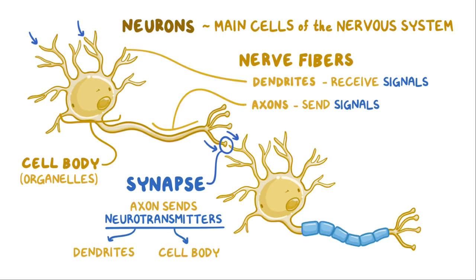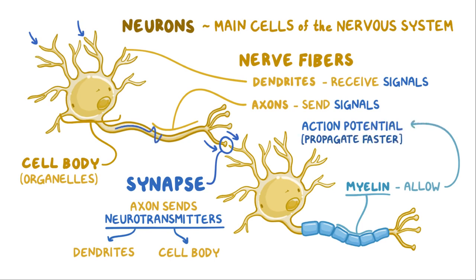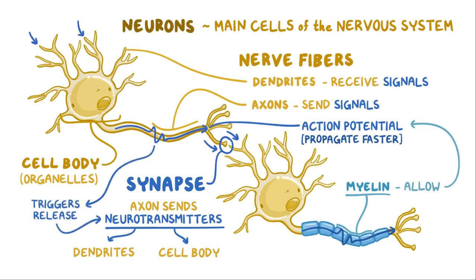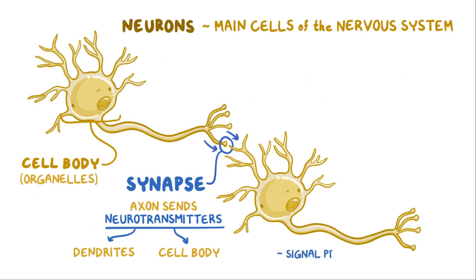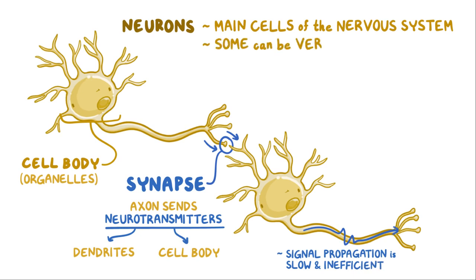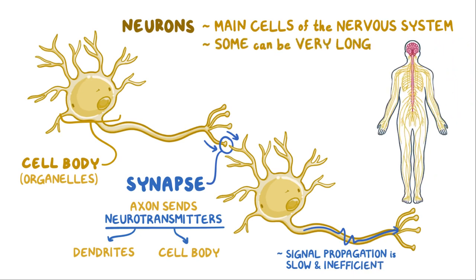The axons are intermittently wrapped in a fatty substance called myelin. Myelin is extremely important to neurons because it helps allow an action potential to propagate much faster. Action potentials are electrical signals that race down the axon and trigger the release of neurotransmitters, or a chemical signal, on the other end. Without myelin, this signal propagation is very slow and inefficient. Since some of these neurons can be very long — especially ones that go from the spinal cord to the toes — the fact that myelin helps speed up action potentials is actually super important.